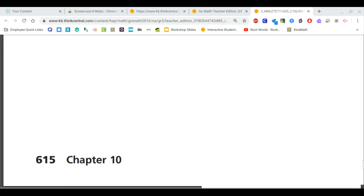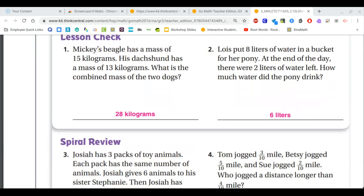For the next page, we're going to be on number one. Mickey's beagle has a mass of 15 kilograms, his dachshund has a mass of 13 kilograms. What is the combined mass of the two dogs? That combined means that we need to add, so that would make 28.